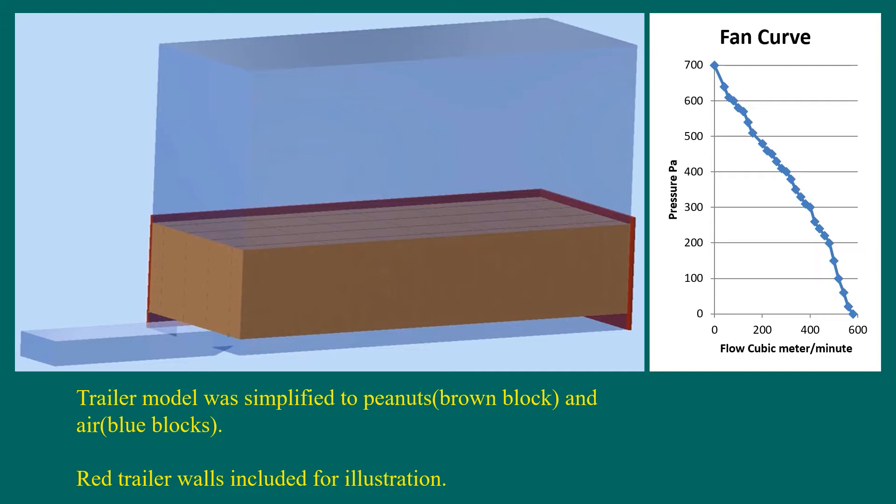Modeling begins with creating a computer model of the shape of the drying trailer airflow path. In this case, only the air, the blue blocks, and the peanuts, the brown block, affect the computational fluid dynamic solution so the metal structure of the trailer is not added to the model. The two red trailer walls behind the peanut block are shown for illustration. The air inlet and outlet blocks are extended to prevent the generation of computational artifacts at the boundaries. The trailer air inlet is at the bottom left of the figure. Air flows from the inlet into the plenum beneath the peanuts, up through the peanuts, and out the top air block.